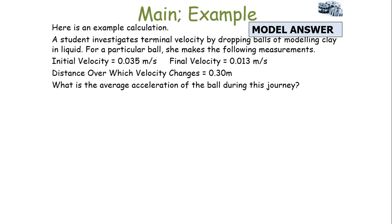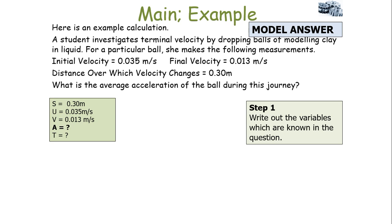Let's look at an example calculation. A student investigates terminal velocity by dropping balls of modelling clay in a liquid. For a particular ball, the initial velocity is 0.035 metres per second, the final velocity is 0.013 metres per second, and the distance over which the velocity changes is 0.30 metres. What is the average acceleration of the ball during this journey? Step one: write out S, U, V, A and T, fill in what you know, and highlight that you're trying to find acceleration.